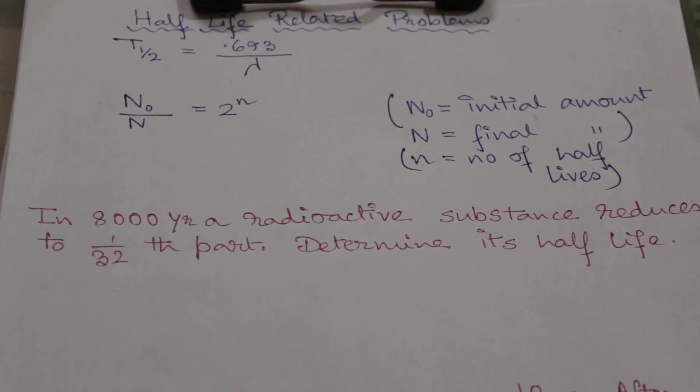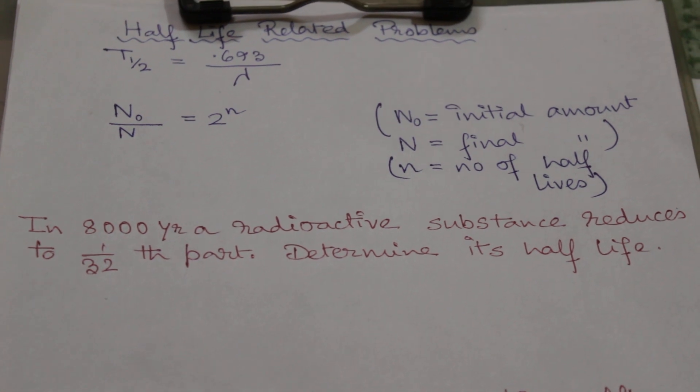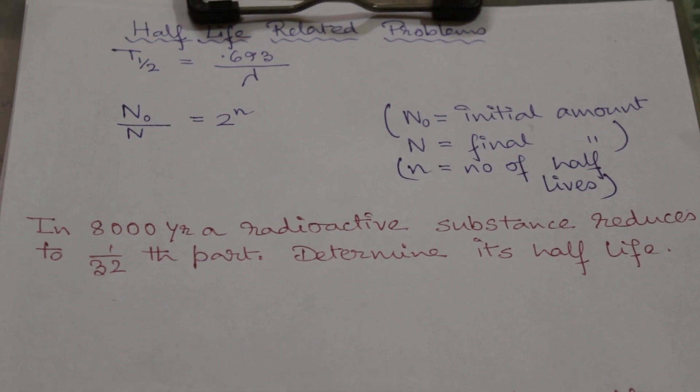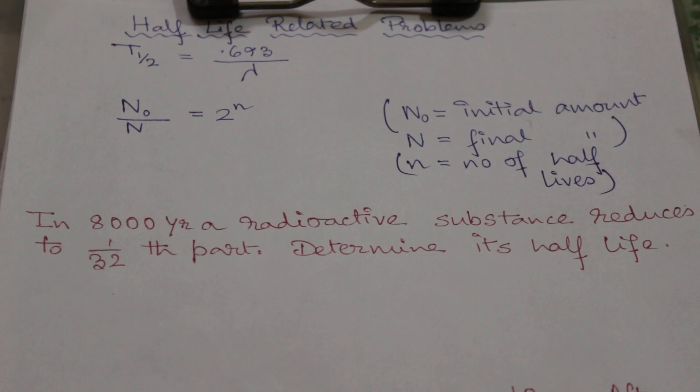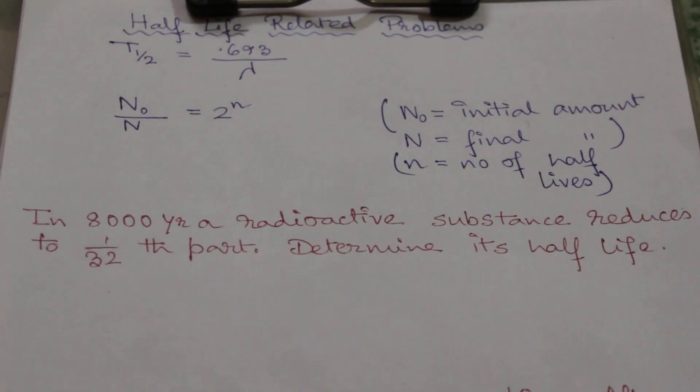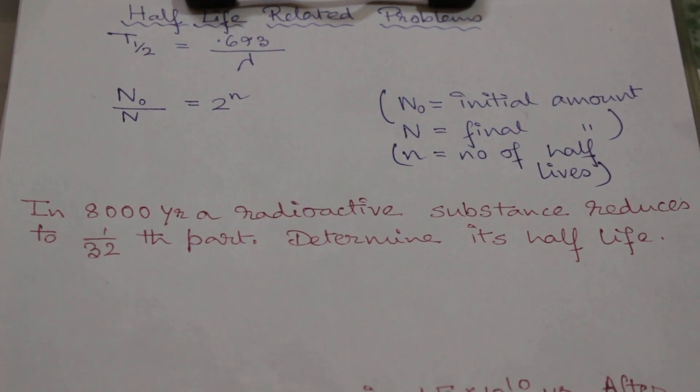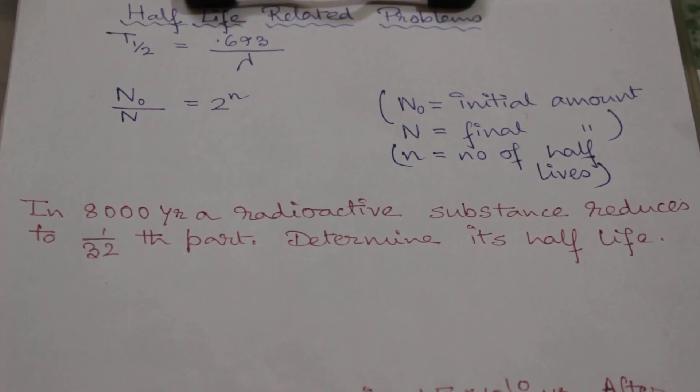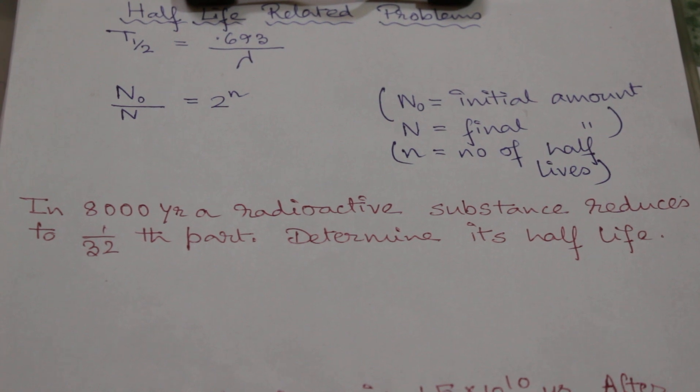Half-life means the time after which the remaining amount will be half of its previous amount. So its formula is t_half equal to 0.693 by lambda, where lambda is the decay constant and t_half is the half-life.